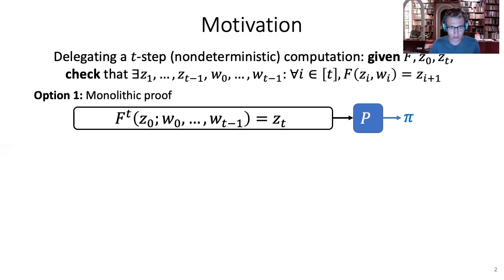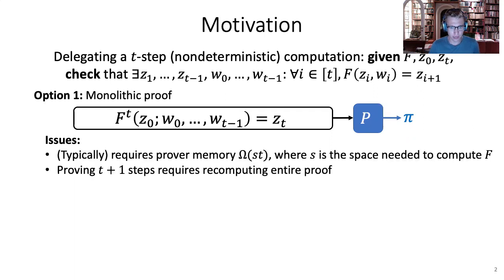There are multiple ways to do this. One is to ask the server to just do the computation and afterwards provide one monolithic proof that it did the entire computation correctly. This works, but it has a few issues: it would require the prover to store all of the intermediate states in memory to perform the proof. And if we did this for T steps and then evolved the computation one more step, it would require recomputing the entire proof.